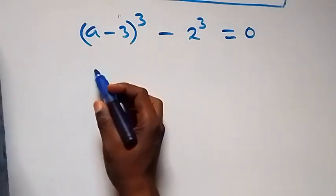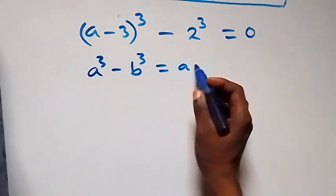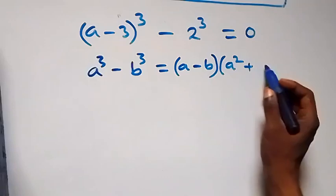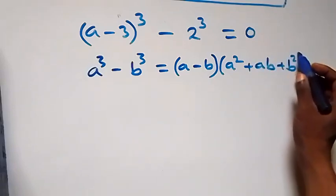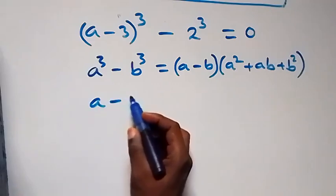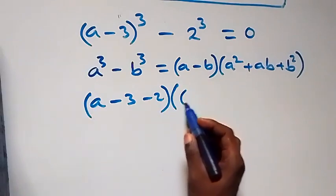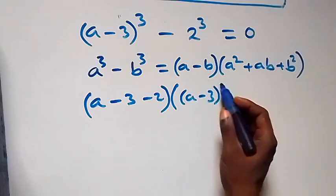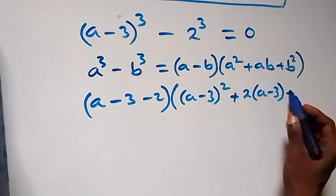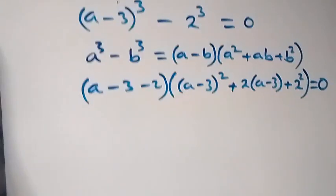From the second case, this follows the difference of two cubes: a cubed minus b cubed equals (a minus b) times (a squared plus ab plus b squared). So this becomes (a minus 3 minus 2) times [(a minus 3) squared plus 2 times (a minus 3) plus 2 squared] equals to 0. Simplifying, that is (a minus 5) times [(a minus 3) squared plus 2(a minus 3) plus 4] equals to 0.